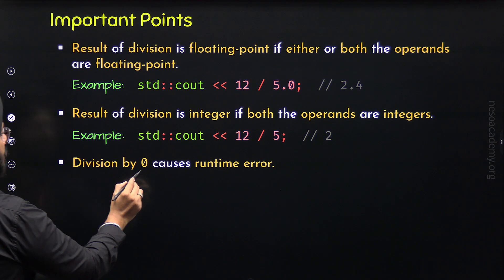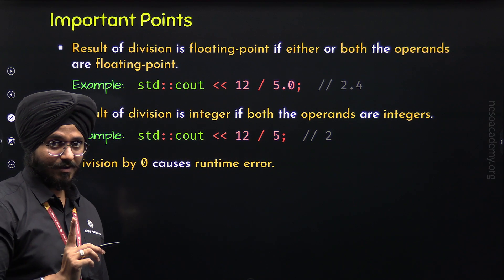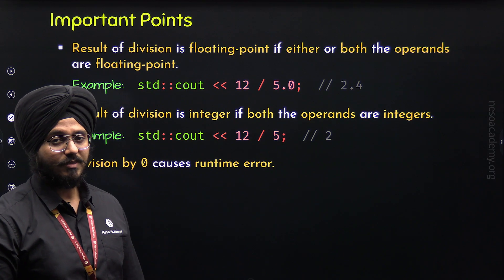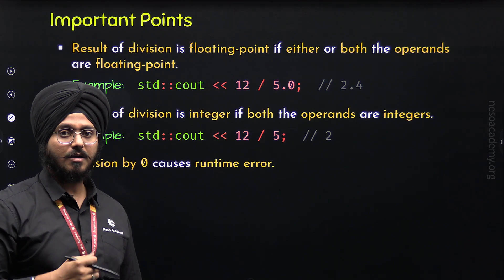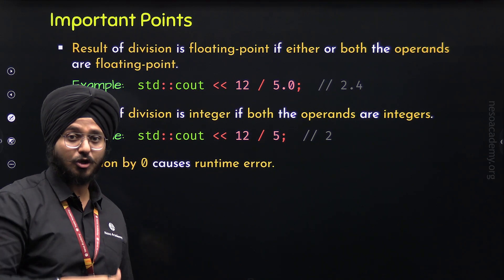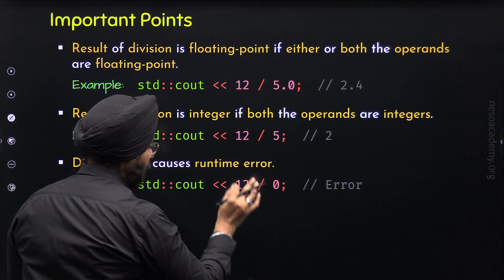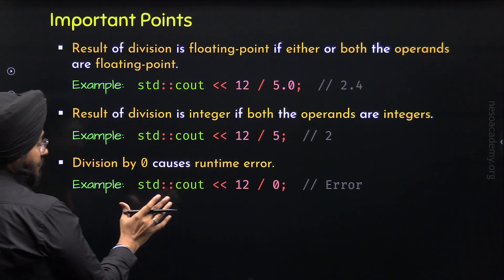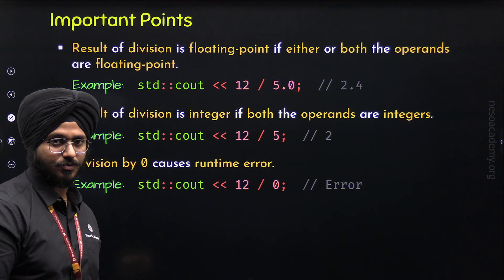Now here comes the third point: division by 0 causes a runtime error. Remember, if we divide a number by 0, then we will get an execution time error. The program may correctly compile, but at the time of execution we will get an error. For example, if we try to divide 12 by 0 and display the result, we will of course get an error.